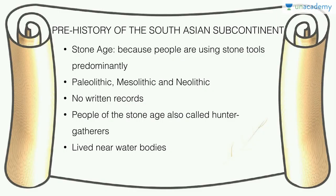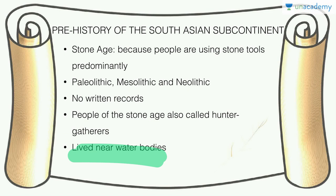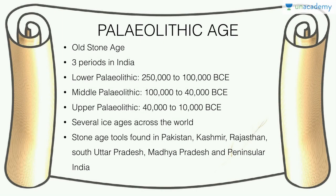The Stone Age is called so because people were using stone tools at this point — predominantly, there were no other tools. It's divided into three parts: Paleolithic, Mesolithic, and Neolithic. This part is called Prehistory because there are absolutely no written records. History is when written records start. People of the Stone Age are also called hunter-gatherers and they lived near water bodies, which was their means of sustenance.